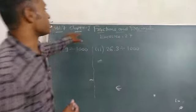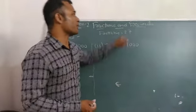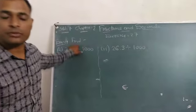Next lecture, Standard 7, chapter number 2, fractions and decimals. Exercise number 2.7, example number 4, question is 5.